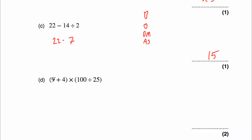Question 14d: (9 plus 4) multiplied by (100 divided by 25). Both are in brackets, so we do brackets first. 9 plus 4 is 13. Then 100 divided by 25: 25, 50, 75, 100 — that's 4. Now 13 multiplied by 4: 4 times 3 is 12 (put 2, carry 1), 4 times 1 is 4 plus 1 is 5, so 52.